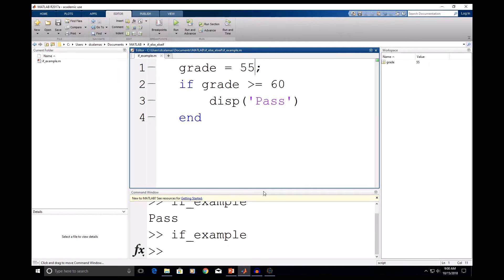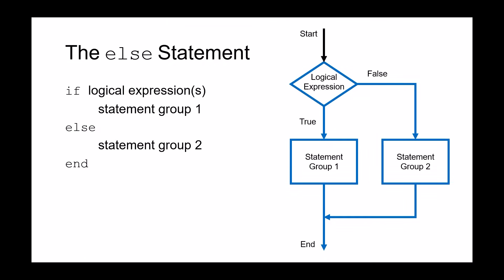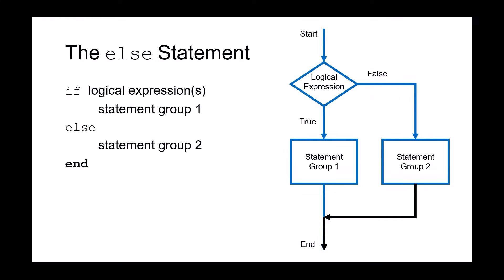So this leads us to the else statement. Here is the structure and a flowchart of the else statement. Again, we start our program with an input and evaluate that input with a logical expression. And if true, statement group one is evaluated and the program ends. Now, unlike the if statement, if this logical expression is false, a second statement group can be evaluated before the program ends.